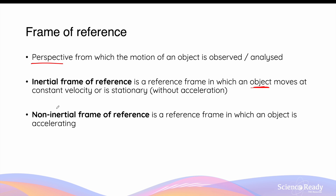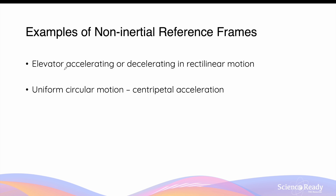A non-inertial frame of reference is one in which the object is accelerating — in other words, it does not have a constant velocity or is not stationary. Two examples of non-inertial reference frames include objects that either accelerate or decelerate in a rectilinear, or straight, motion — this includes elevators when they are going upwards or downwards — and it also includes uniform circular motion.